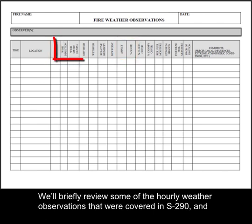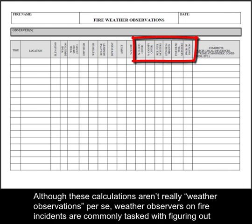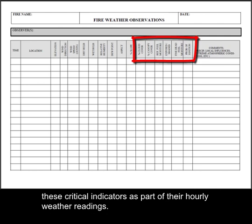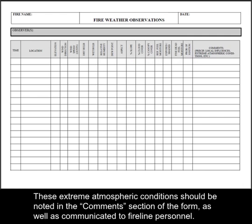We'll briefly review some of the hourly weather observations that were covered in S290, and then we'll look at the environmental observations needed to calculate fine dead fuel moisture and probability of ignition. Although these calculations aren't really weather observations per se, weather observers on fire incidents are commonly tasked with figuring out these critical indicators as part of their hourly weather readings. We'll finish up this lesson with a discussion of some extreme atmospheric conditions and their effects on fire behavior. These extreme atmospheric conditions should be noted in the comments section of the form, as well as communicated to fire line personnel.